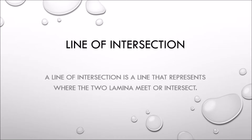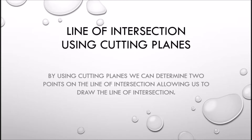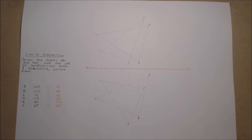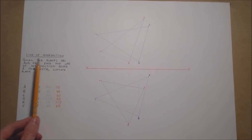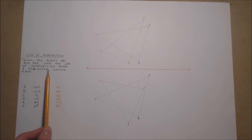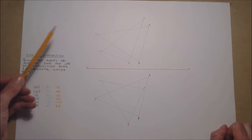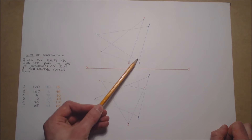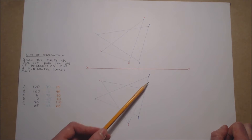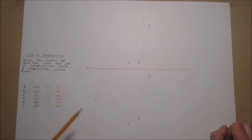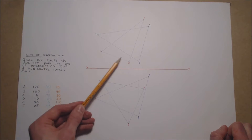A line of intersection is a line that represents where two lamina meet or intersect. Using cutting planes we can determine two points on the line of intersection, allowing us to draw the line of intersection. Using the coordinates to set up the planes ABC and DEF in plan and elevation, find the line of intersection between the planes ABC and DEF using horizontal cutting planes.